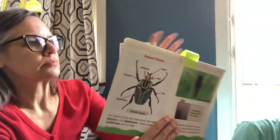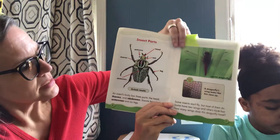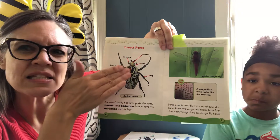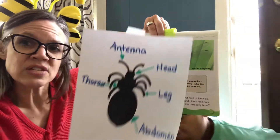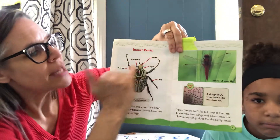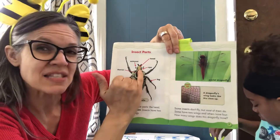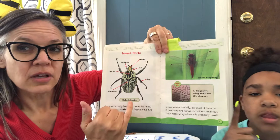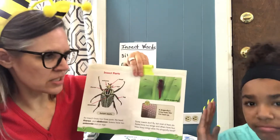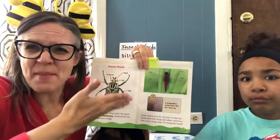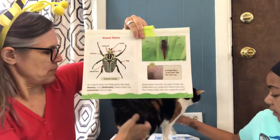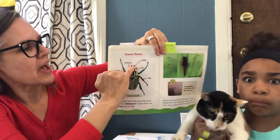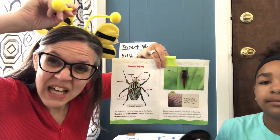Let's look at their body parts. Insects have three body parts. This insect is called a goliath beetle — he's a little tricky to see his separate body parts, but he has a head, a middle section called a thorax — can you say that? Thorax — and a bigger part called an abdomen. If you ever hear somebody doing sit-ups, what are they working out? They're working their abs, their abdominal muscles, their abdomen. So they have three different body parts.